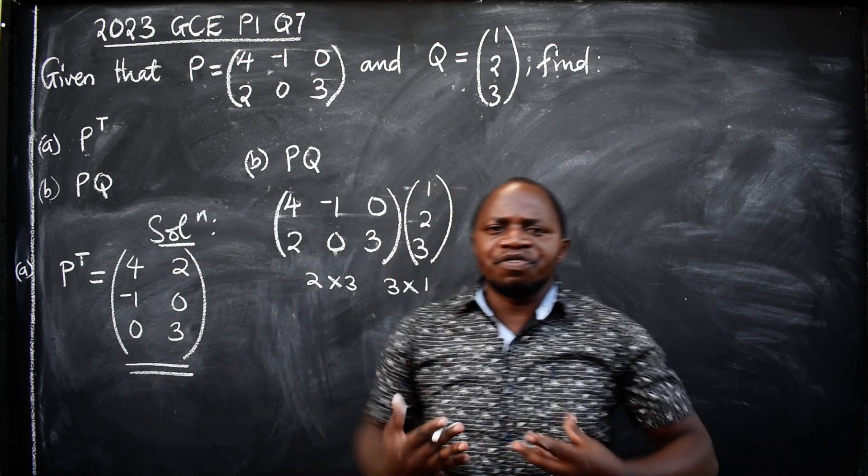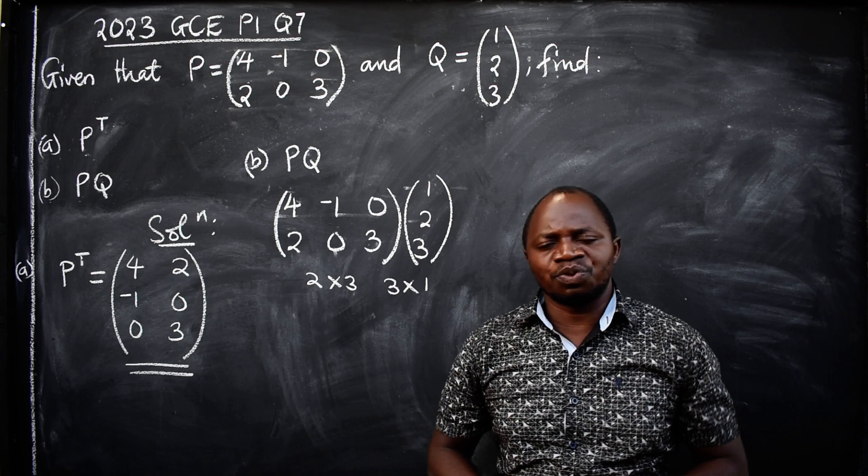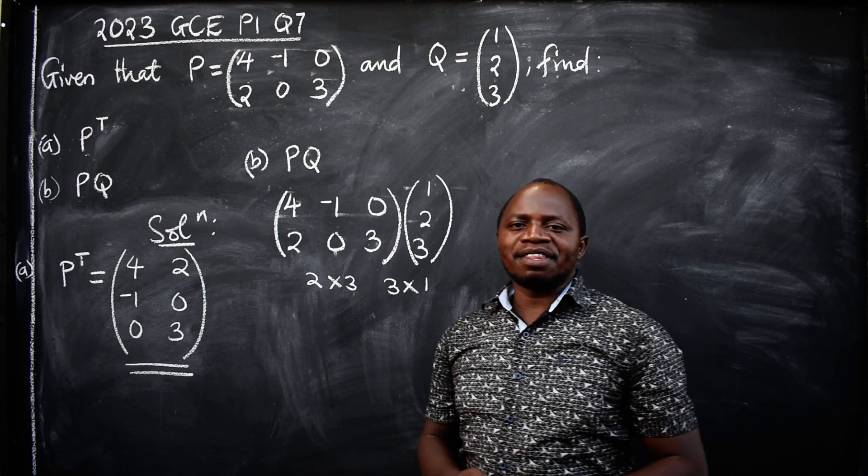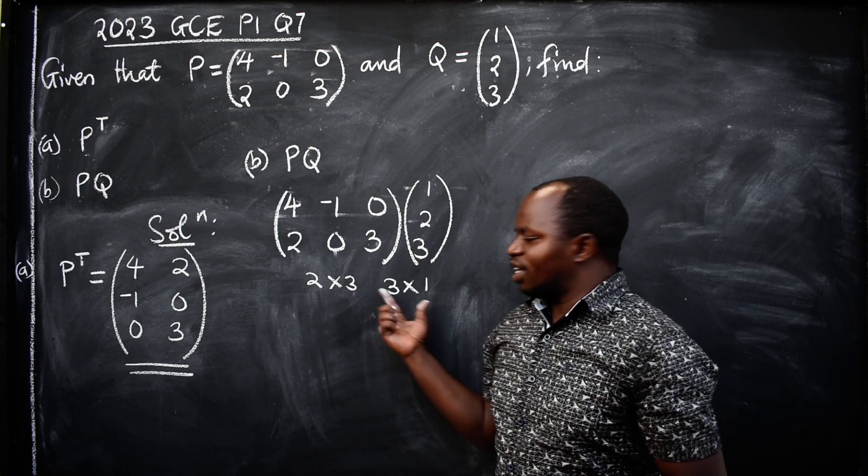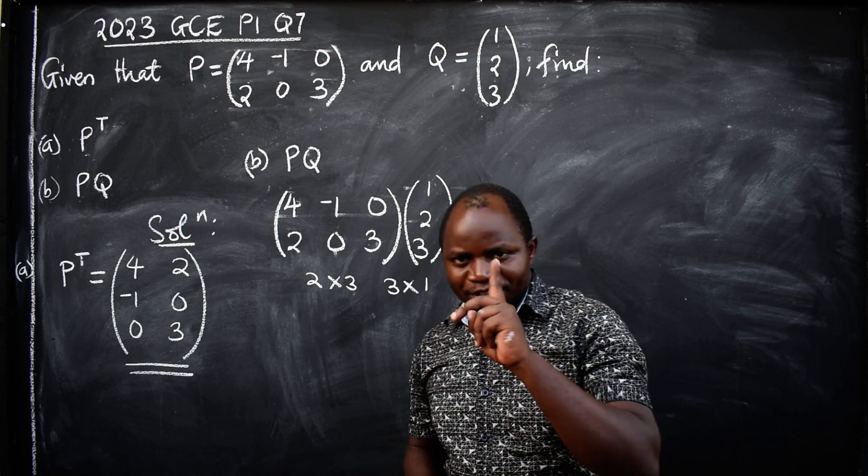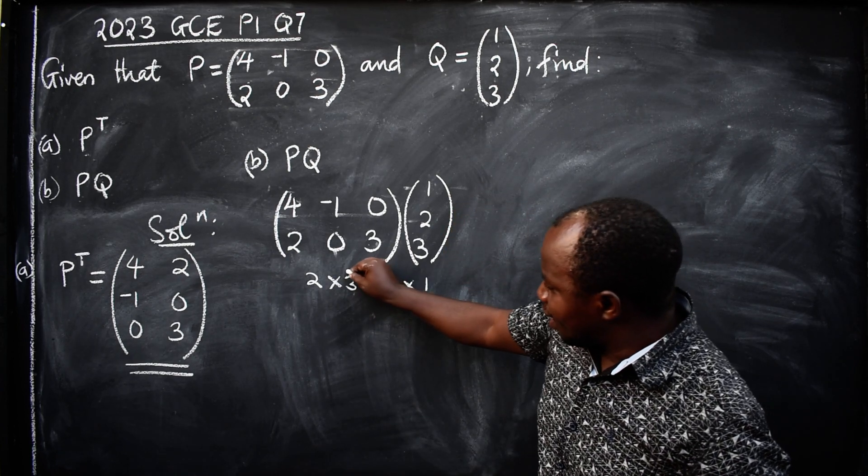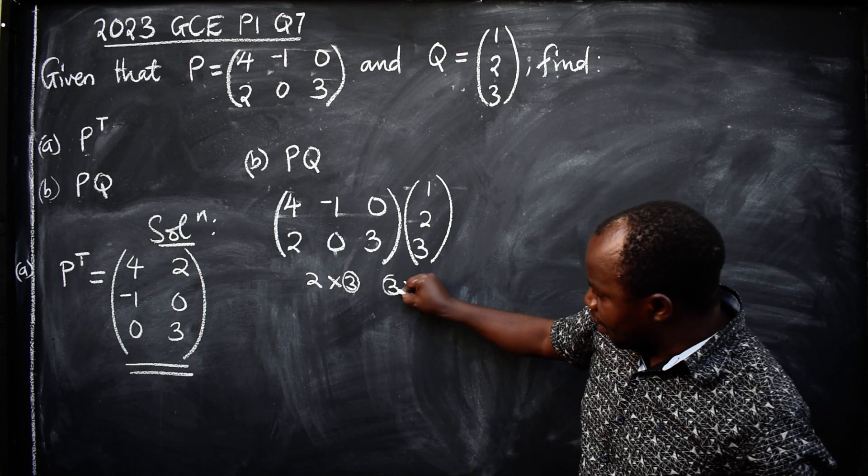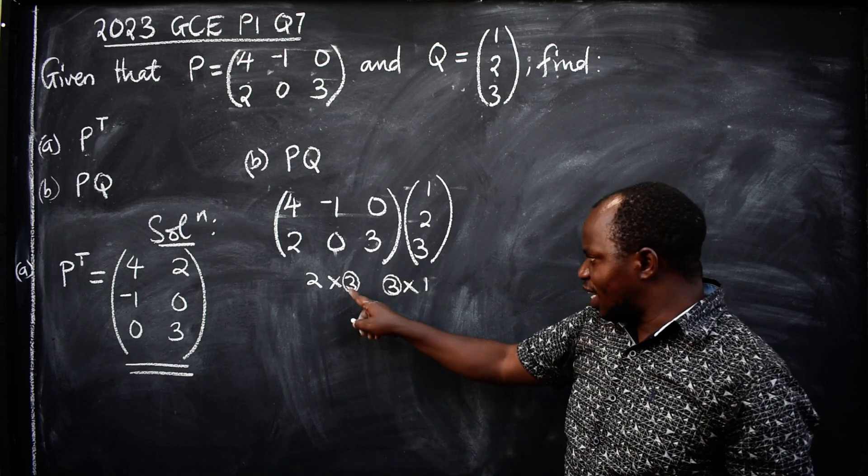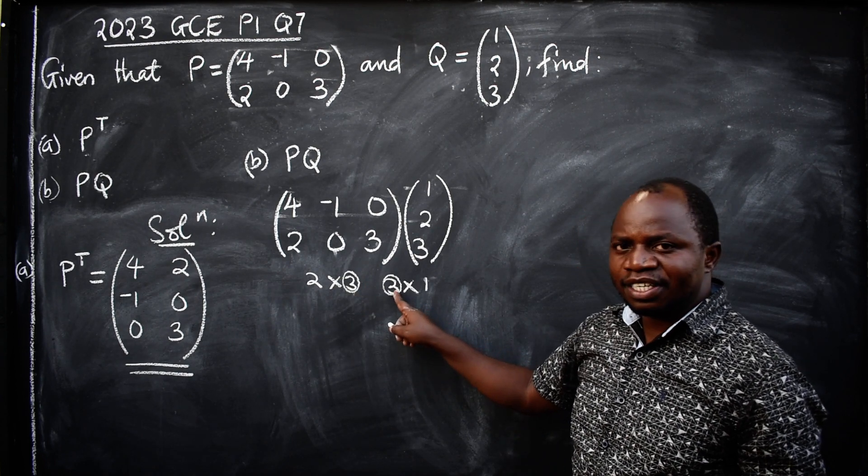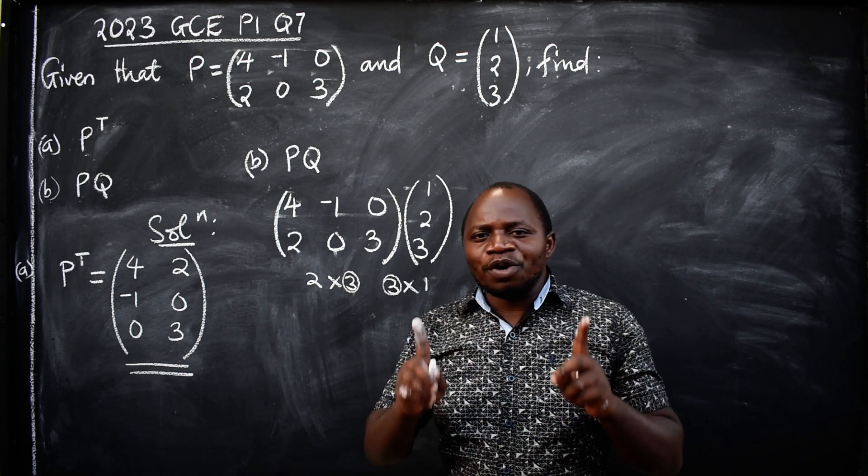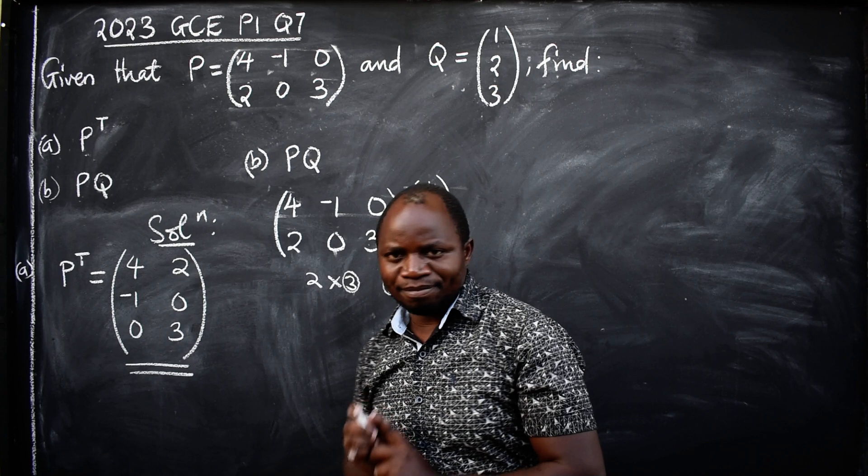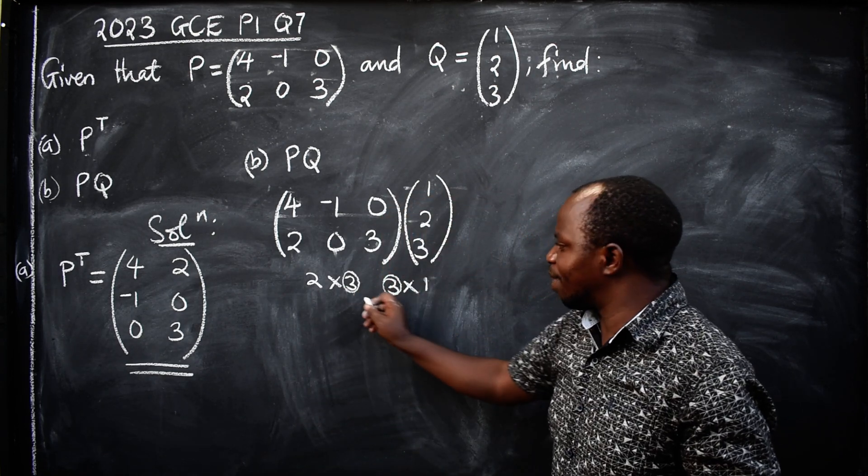But what is the essence of you writing their orders when you are asked to multiply? The reason behind that is the orders will help you. Look at this number, the last number in the first matrix, and also the first one. So the last and the first, they should always be the same. Take note.